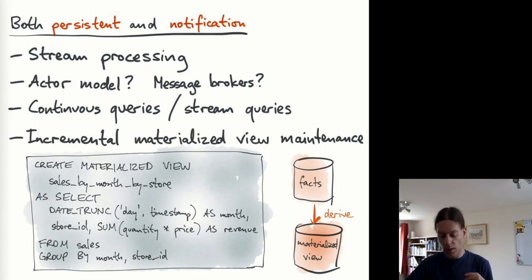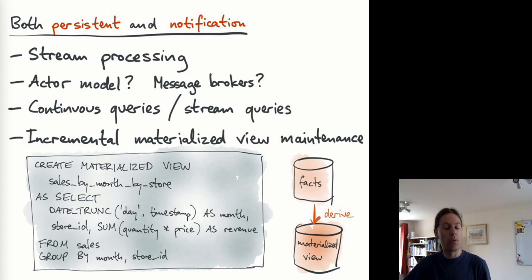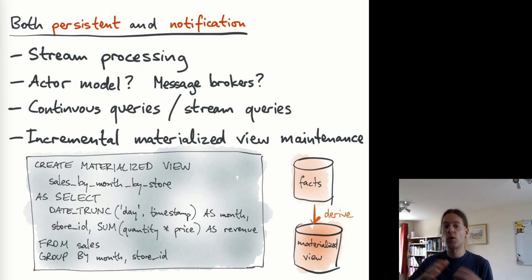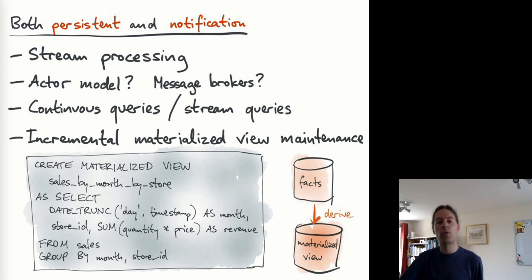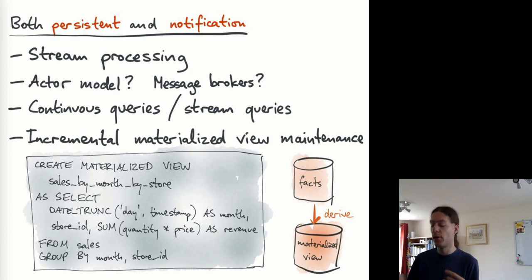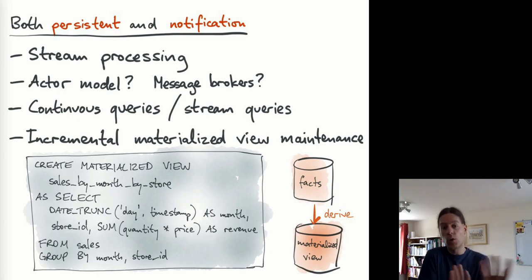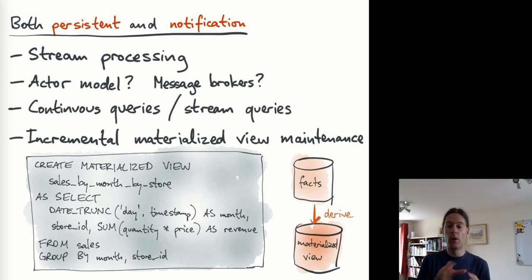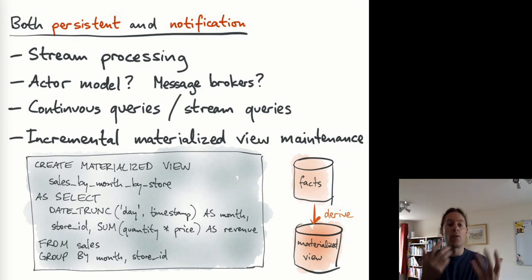A similar concept appears in some databases as materialized view maintenance. A materialized view is essentially a cache of the result of some query — for example, aggregating the value of sales for each calendar month by the store in which they occurred, a standard GROUP BY query summing revenue. You keep a cache of this as a number for each month and each store. Whenever a new sale gets added to the underlying sales table, you need to update the materialized view. Like stream queries, this is a notification mechanism where a change in underlying data results in a change in this derived dataset.